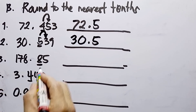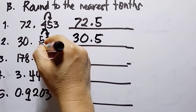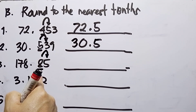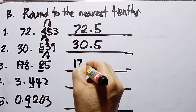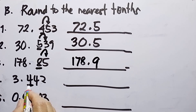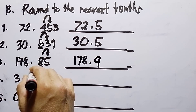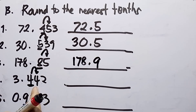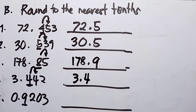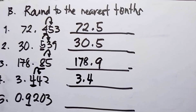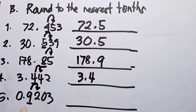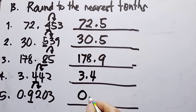Number three: the underlined tenths digit is 8. Since the digit to the right is 5 or more, I add one: eight plus one becomes nine. Answer: 178.9. Number four: the tenths digit is 4, and the digit to the right is less than five, so it remains. Answer: 178.4. Wait — it remains 3.4. Number five: the tenths digit is 9, and the digit to the right is 2, which is less than five. Answer: 0.9.